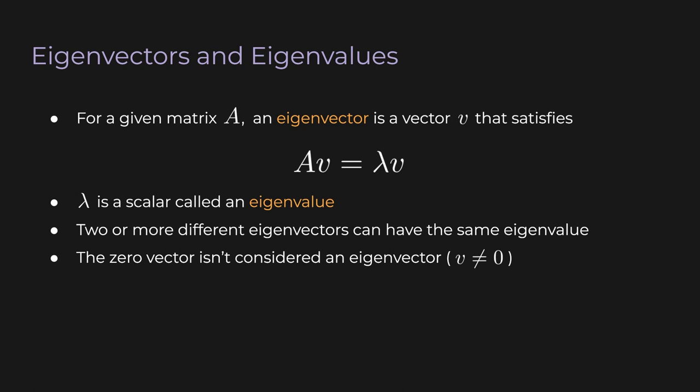Now if you think carefully about this equation, you'll realize it implies that A must be square. If it weren't square, the input and output vectors would have different sizes, and we could never have any eigenvectors.